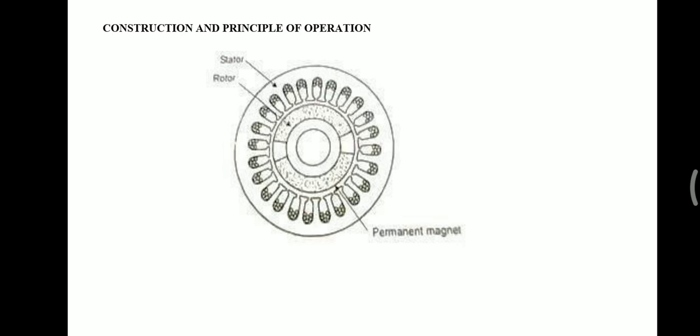The construction and principle of operation: Here you can see the construction diagram of the machine. The Permanent Magnet Synchronous Machine generally has the same operating and performance characteristics as synchronous machines. A permanent magnet machine can have a configuration almost identical to that of conventional synchronous machines, with the absence of slip rings and field winding.